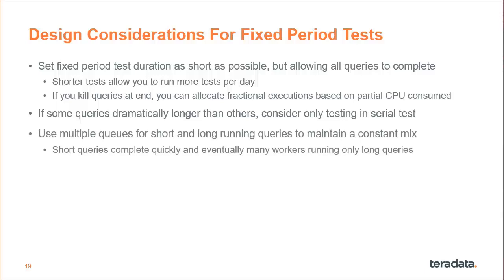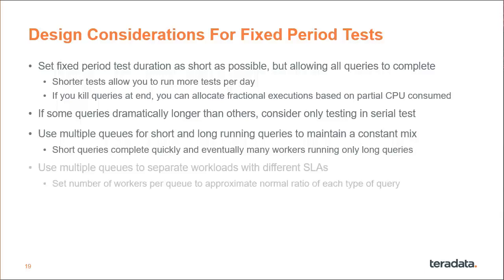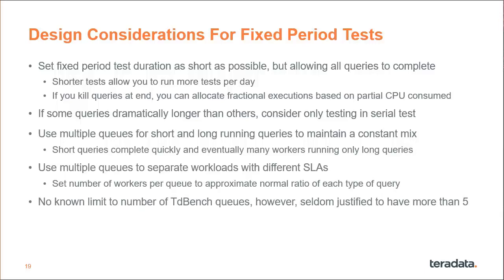You'll want to use multiple queues to separate short and long-running queries so that you keep a constant mix. If you have workers drawing queries off of a single queue, the short queries will finish quickly and eventually you'll end up with more and more workers running long queries. By having separate queues, you can maintain a constant mix throughout the test. You'll also want to consider using multiple queues to separate workloads with different SLAs, setting the number of workers per queue to approximate the normal ratio of each type of query. In my experience, it's seldom justified to have more than about five queues — more often I have only about three.